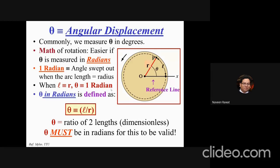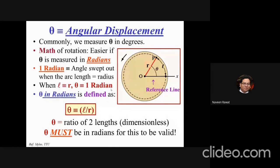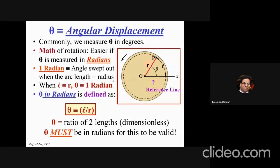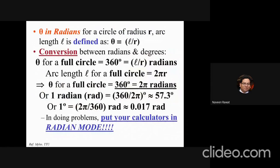One radian is the angle swept out when the arc length equals the radius — that is, when l equals r, then l/r equals 1 radian. From this, for a full circle the arc length is 2πr, divided by r gives 2π radians equal to 360 degrees. Therefore one degree equals 2π/360 radians. From now on, ensure you are using radian mode in your calculator — many students use their phone calculators not set to radian mode and end up making mistakes.